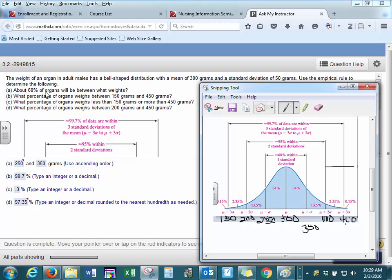So part A: about 68% of organs will be between what two weights? Using our Empirical Rule, within one standard deviation we should see 68% of our data. So if we highlight where these bars fall, one standard deviation is here. That means it should be between 250 and 350.